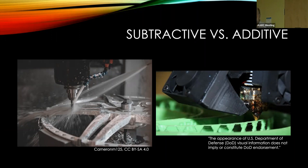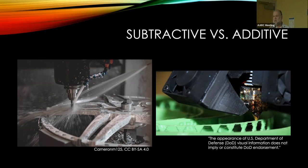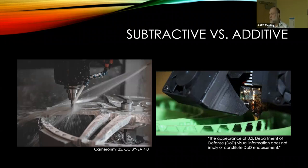Subtractive manufacturing is like sculpting. Michelangelo and Bellini — they don't see a block of marble, they see the David or the Pieta. They start chipping away marble until it looks the way they imagine. That's called subtractive manufacturing, and most traditional machining processes are subtractive.